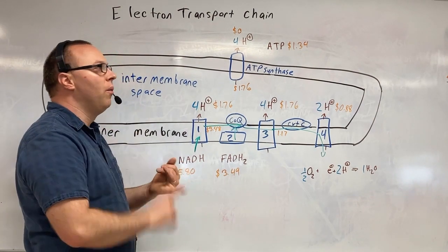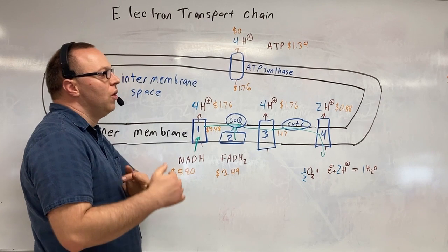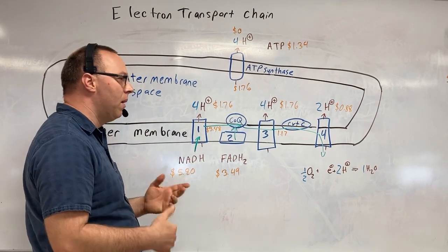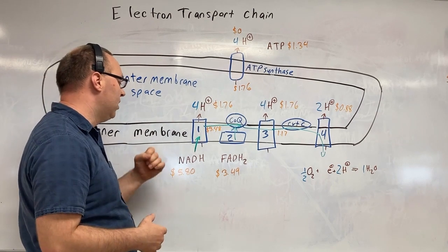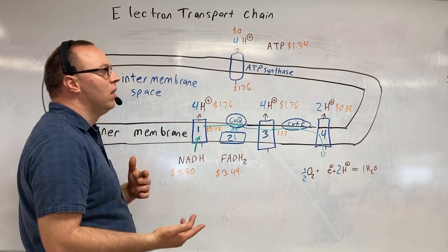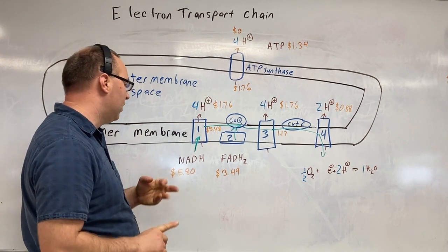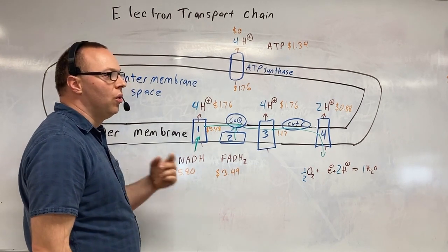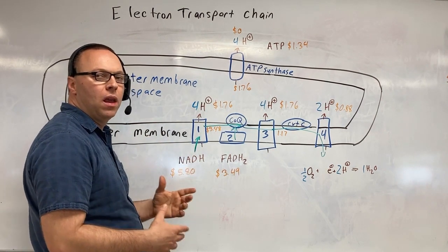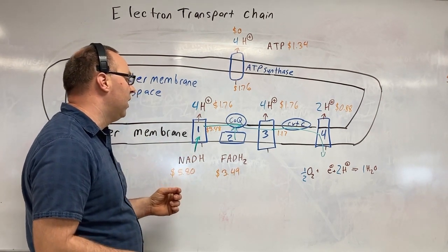All of these steps, whether we're dealing with glycolysis, whether we're doing pyruvate oxidation, whether we're doing the Krebs cycle, we produce these NADHs and FADHs. Some steps, like glycolysis and pyruvate oxidation, just produce NADH, or other steps produce both, but they're storing energy in the form of this NADH and FADH.